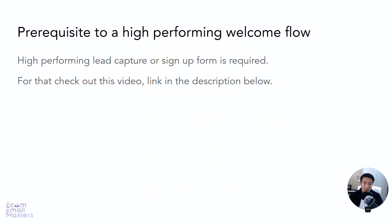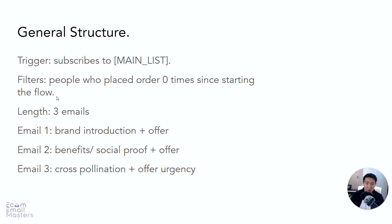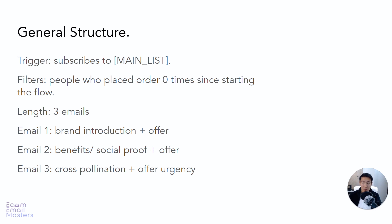When it comes to the welcome flow, it's a super important flow because this flow alone is going to generate you up to 10% of your total store's revenue additionally through emails, if done right. Let's talk about the general structure first. For the trigger, you want to make sure it's 'subscribes to main list' or whenever they join that list. In terms of filters, you want to filter out anyone that's placed an order since starting this flow, because then they should be exited out of the welcome series and entered into the customer thank you flows. In terms of length, I like to keep this three emails long. Email number one is a brand introduction plus the offer. Email number two is tailored towards social proof and talking about the benefits of your products and again stressing the offer. And lastly, email three is cross-pollination plus offer urgency.